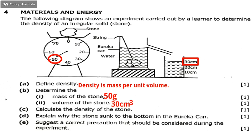Question 4c is: calculate the density of the stone. To calculate the density, we write the formula: density equals mass over volume. So that is 50 grams over 30 cm³.